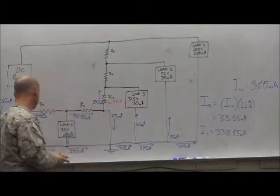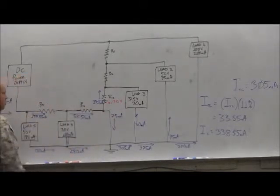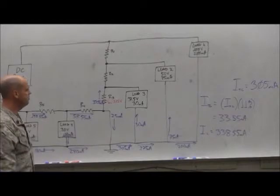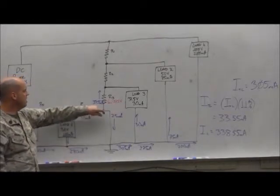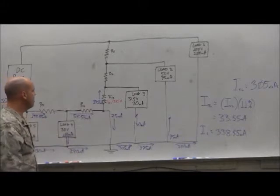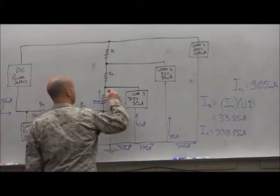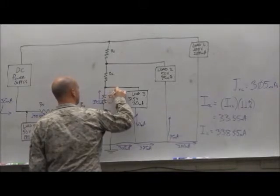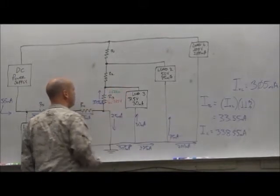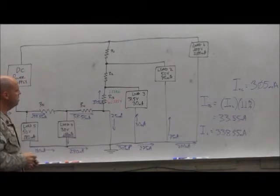Can we find the resistor value for R3 now? Yes, what is it? 37.5 volts divided by 33.55 milliamps gives us 1.12 k ohms. 1.12 k ohms is the resistor value for R3.